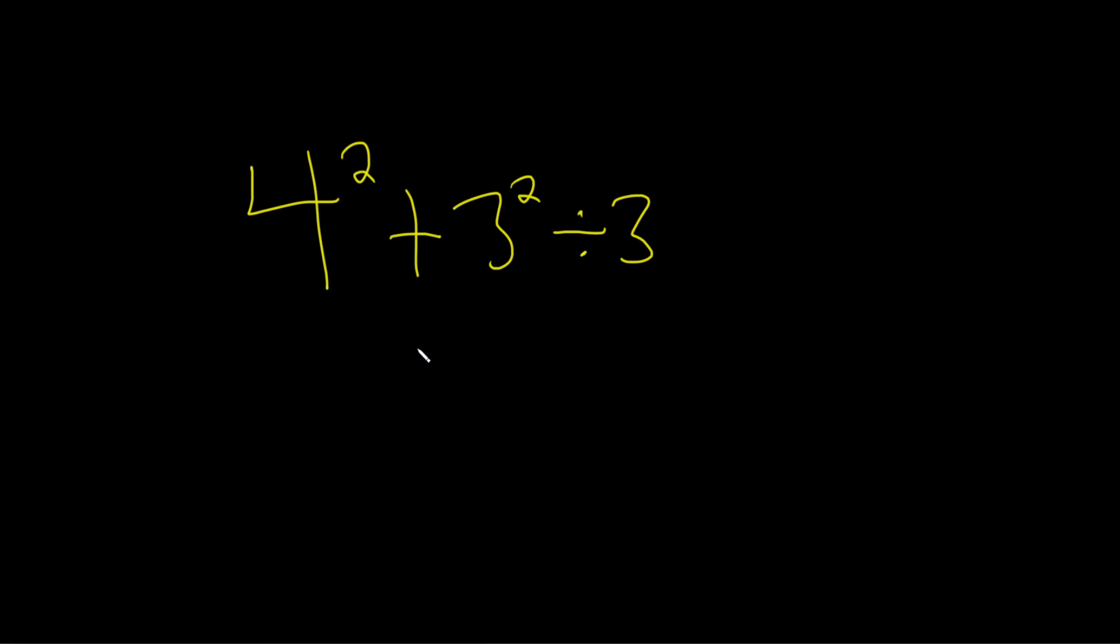So let's just do it one step at a time, focusing on multiplication and division first. First notice that 4 squared actually means something. So this is shorthand notation for 4 times 4. Likewise 3 squared means something. It's just notation for 3 times 3.